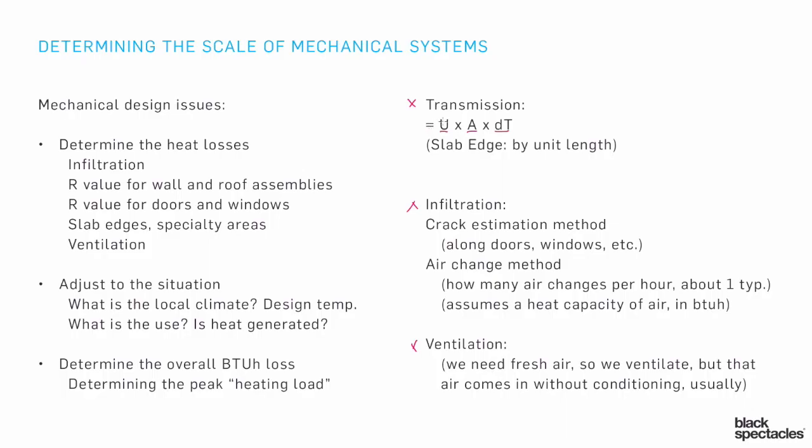That tells us we need to be putting a lot of heat energy into the heating system in order to balance out the loss of heat through transmission — through the roof assembly, through the wall assembly, etc. The U, remember, is the same as 1 over the R. It's the inverse of the R value.